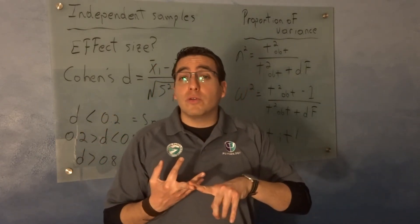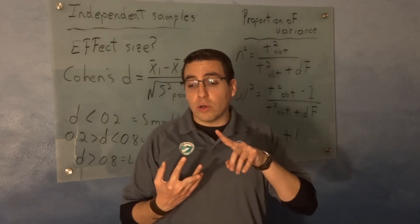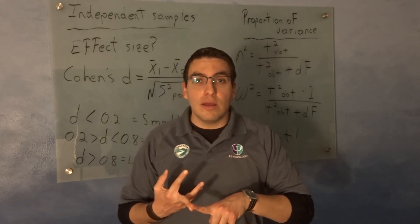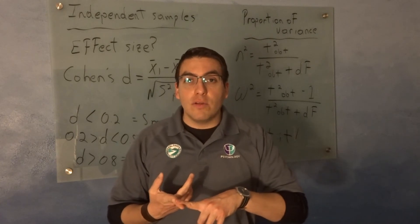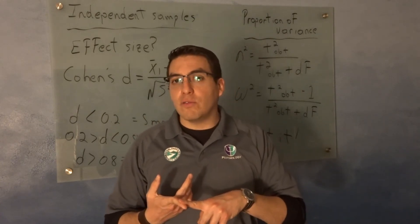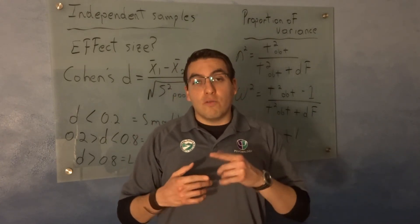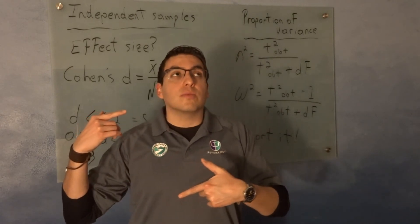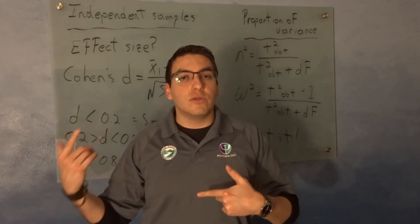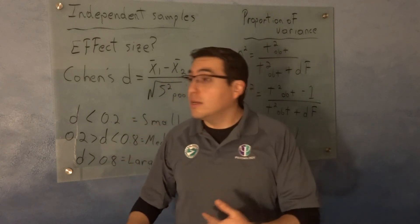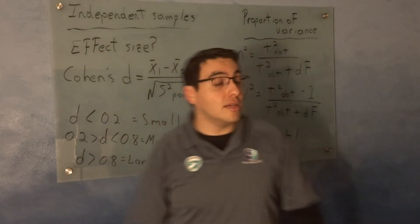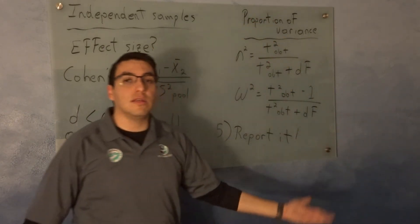And then make sure that you report your inferential statistics. You want to report your t obtained value, your alpha level. Was it 0.05? Was it less than 0.05? And overall, let's say that you rejected or failed to reject the null hypothesis. And if you rejected, make sure you get your effect size and tell me how much of the proportion of variability that you have.